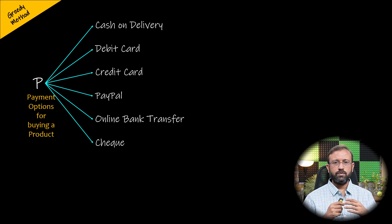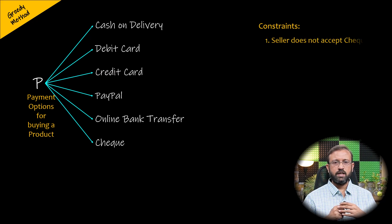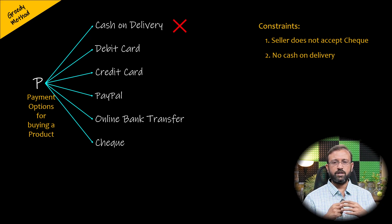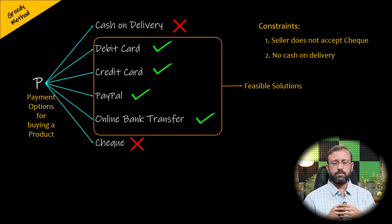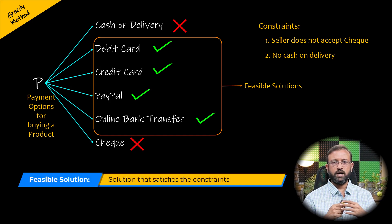Most problems that use the greedy method have to satisfy some constraints. In this problem, let us consider that the seller does not accept checks nor cash on delivery. Therefore, we cannot make payments through these options because of the constraints, and those solutions are eliminated. The remaining solutions — using debit or credit cards, PayPal, or online bank transfer — satisfy the constraints, so these are feasible solutions. A feasible solution is a solution that satisfies the constraints.